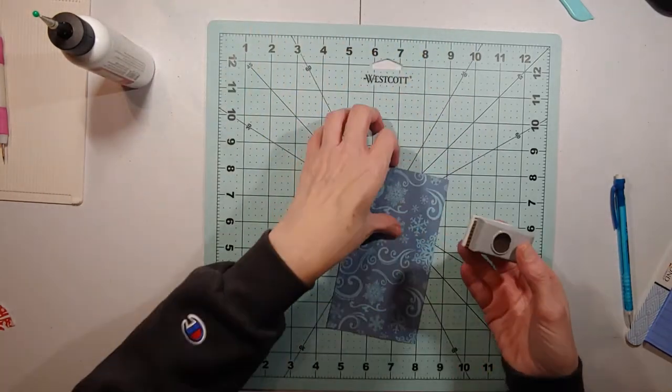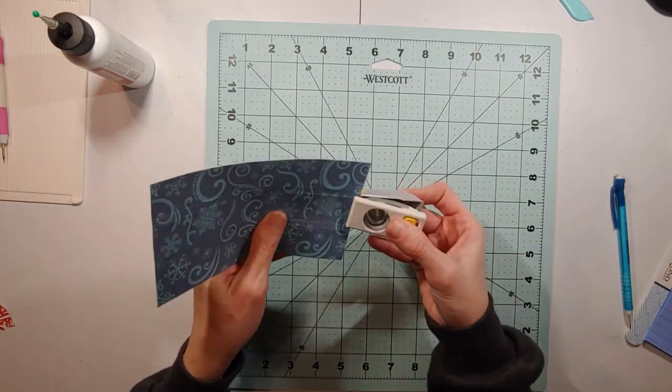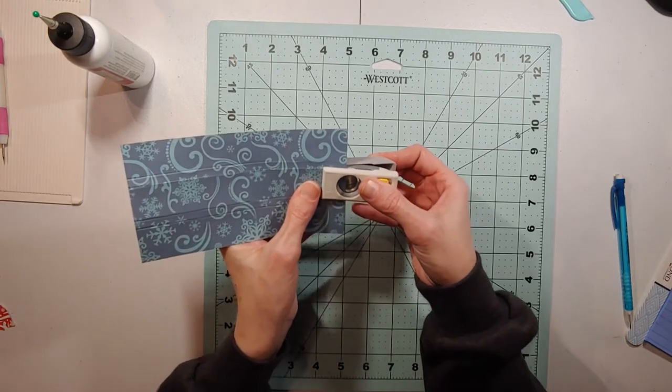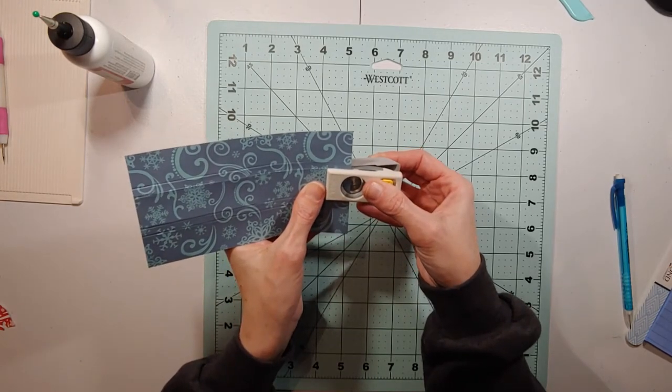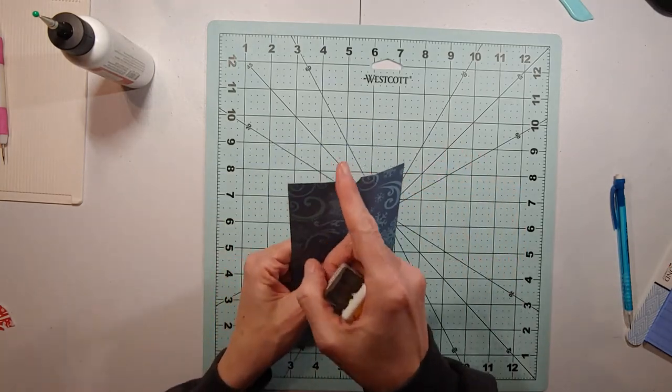But I'm going to go ahead and punch this. Just put it in, not even halfway of the circle. If you have a small circle punch, you can do it that way. And see, it just gives you that little notch.